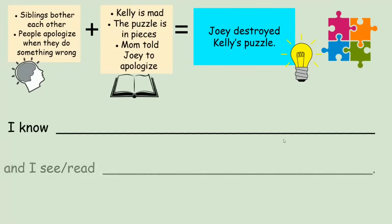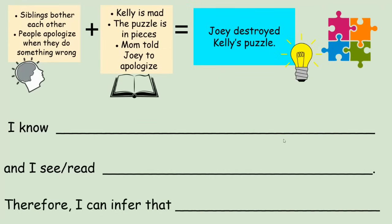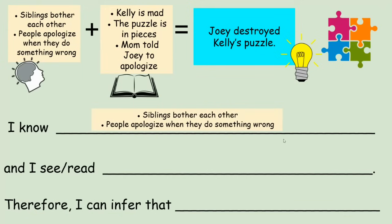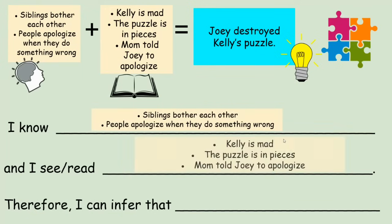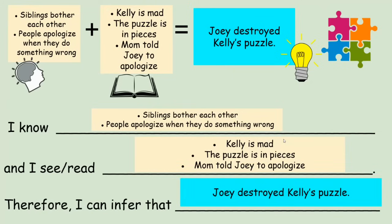Let's practice using the second sentence frame: 'I know blank, and I see or and I read blank — therefore I can infer that blank.' I know siblings bother each other and people apologize when they've done something wrong. And I read that Kelly is mad, the puzzle is in pieces, and mom told Joey to apologize. Therefore, I can infer that Joey destroyed Kelly's puzzle.